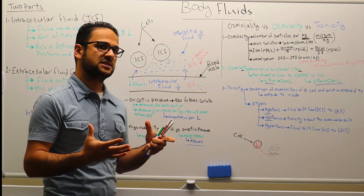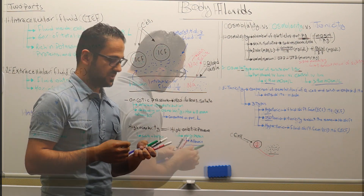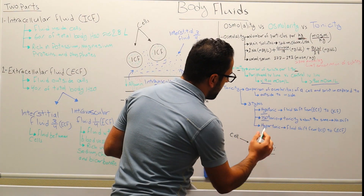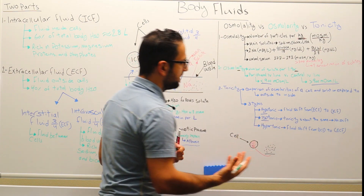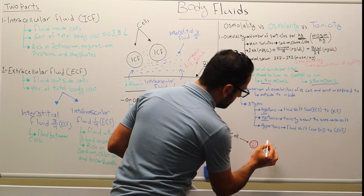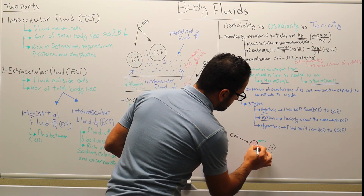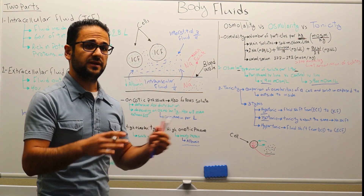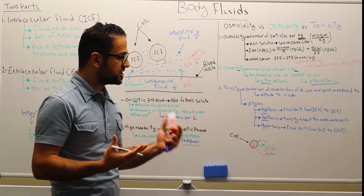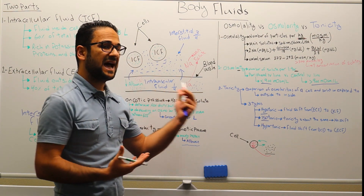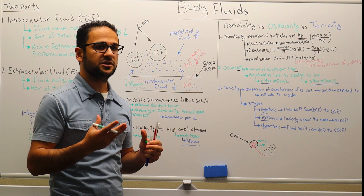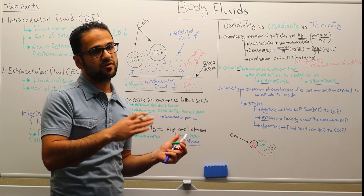When water moves into the cell, the cell will expand and could be damaged over time. The second type is isotonic. Isotonic means that the tonicity is about the same on both sides, so there is no net shift in fluid. Fluid still moves in and out of the cell, but the concentration of solutes inside and outside is about the same, so there is no cell damage.